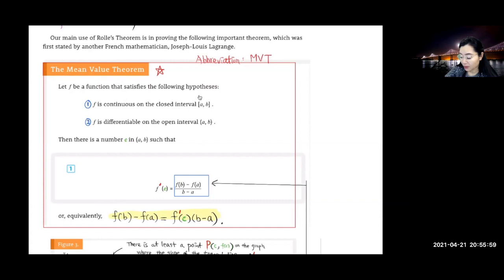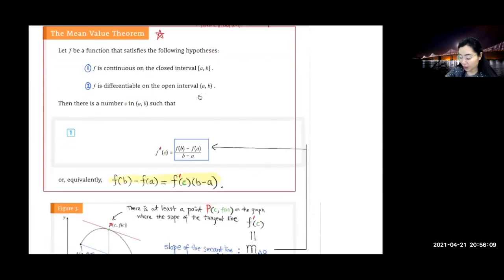1. f is continuous on this closed interval a to b. 2. f is differentiable on this open interval a to b. Then there is a number c in this open interval a to b, such that f'(c) is equal to this quotient.